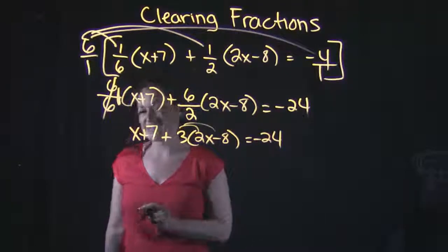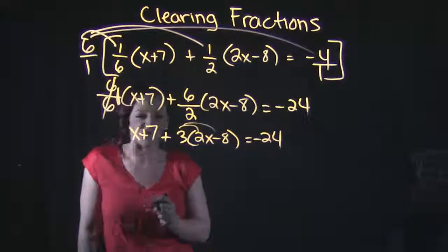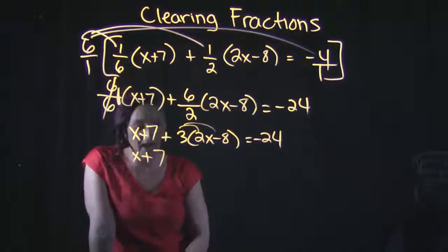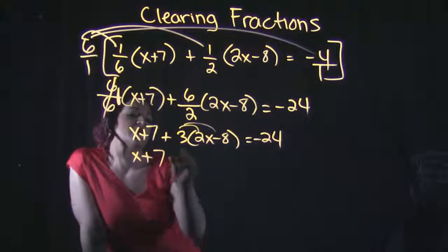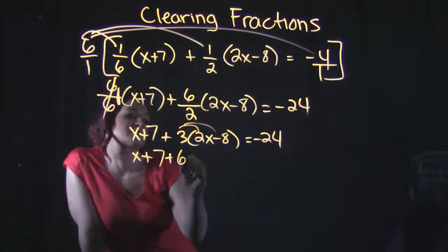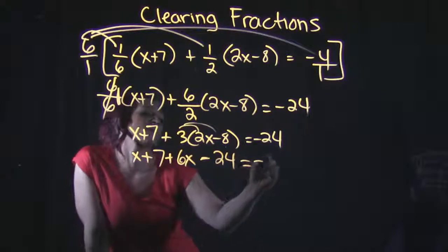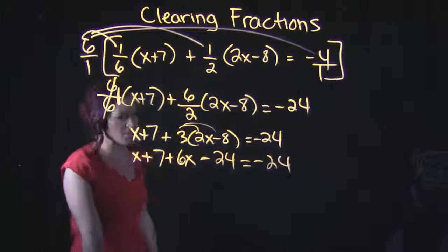So because we still have parentheses, we want to go ahead and distribute that three. Let's drop down the x plus seven, now distributing that three. Three times two x is six x, minus three times eight is 24. Drop down the rest of the problem.